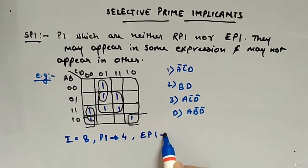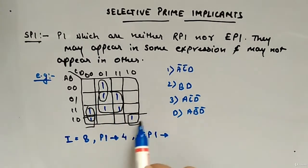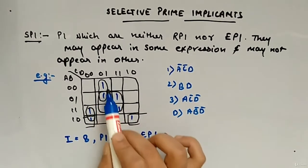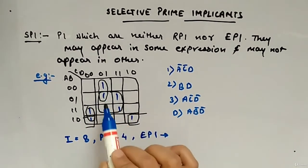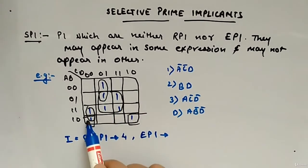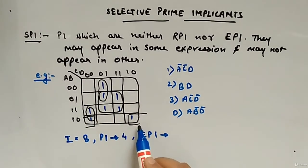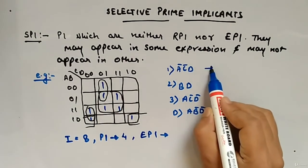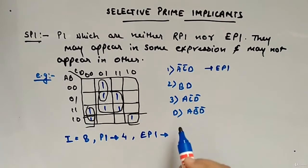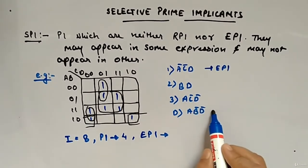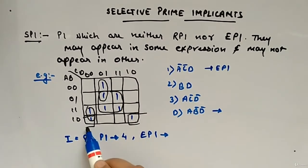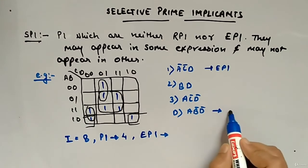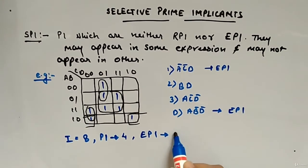What about essential prime implicants? You can see that these two groups are essential prime implicants — this group and this group — because these min terms have only one option of pairing. So which ones are they? I think A-bar C-bar D — this is your essential prime implicant. Then the last one, A B-bar D-bar — so two essential prime implicants are there.